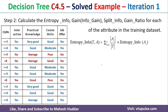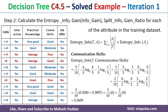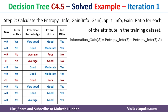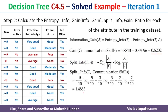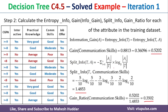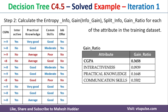For communication skill, the entropy info is 0.3609, information gain is 0.5202, split info is 1.4853, and gain ratio is 0.3502. Comparing all four gain ratios, CGPA has the maximum gain ratio of 0.3658, so we select CGPA as the root node and start building the tree.